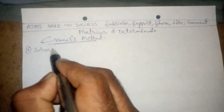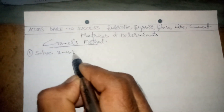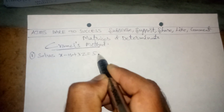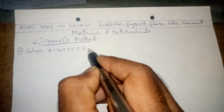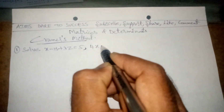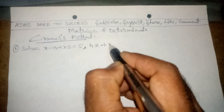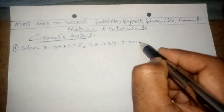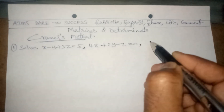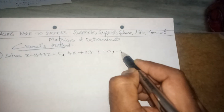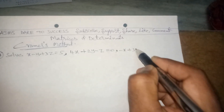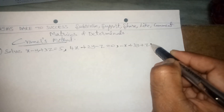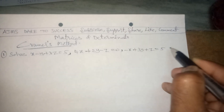The question is: solve x minus y plus 3z equals 5, 4x plus 2y minus z equals 0, minus x plus 3y plus z equals 5.